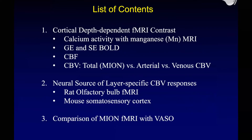My talk is going to be three parts. First one: we have a lot of different fMRI contrasts and we are going to compare the different contrasts, which is going to be best for the layer-specific fMRI research. This is cumulative work my lab did over the last 10 to 20 years or so. Then we're working on the neural source of layer-specific fMRI signal — the neural correlates of the fMRI signal. And last, you are working on human fMRI, so we are trying to compare my animal fMRI with the VASO.